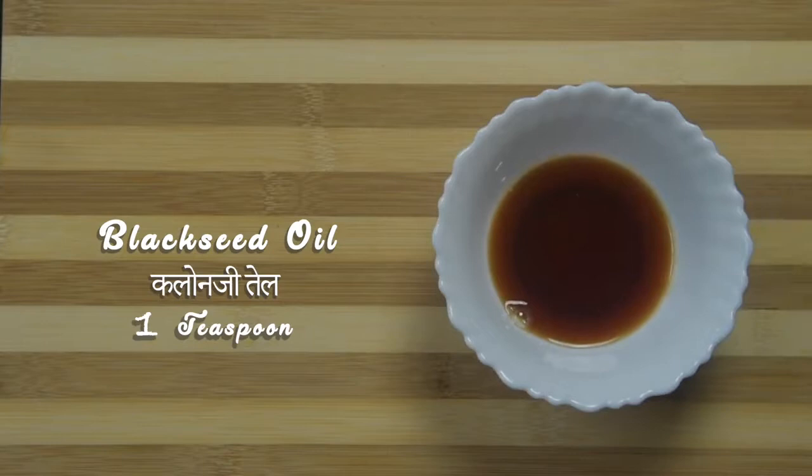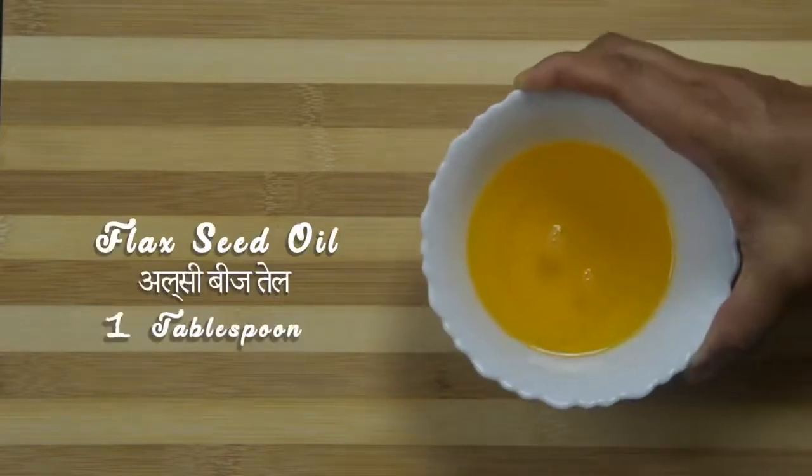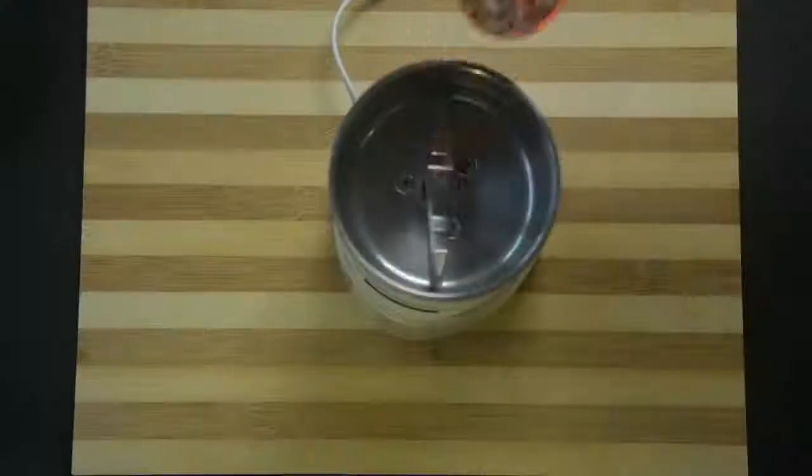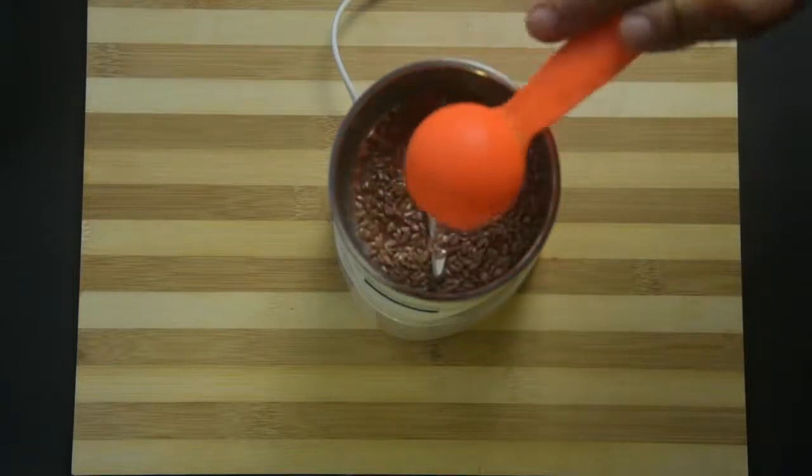Add 1 teaspoon cold-pressed black seed oil or kalonji oil and 1 tablespoon cold-pressed flax oil. Take flax seeds into a coffee grinder or small jar of a mixer grinder.